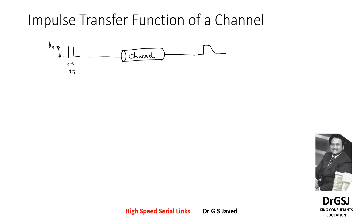When you transmit this to the channel, the amplitude gets updated to A0-bar, which could be a scaled-up or scaled-down version. The time pulse might also get extended beyond the symbol time Ts. That is called inter-symbol interference, meaning it is taking more than one bit time for the energy to be contained.